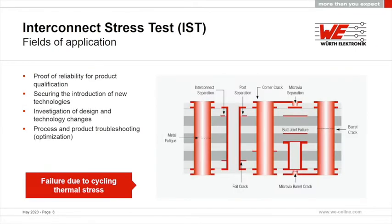Now we look at the fields of application for the interconnect stress test. First, it can be used as proof of reliability for product qualification — if you have a new product, you can use the IST to gain knowledge about its reliability and how it performs. It can also be used to secure the introduction of new technologies — not only a new product, but for example when using new or different materials.